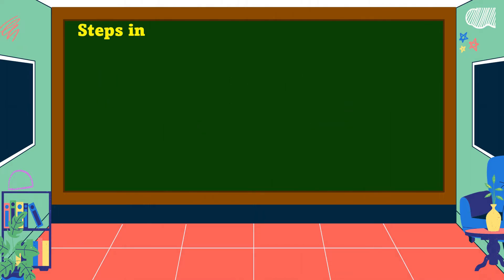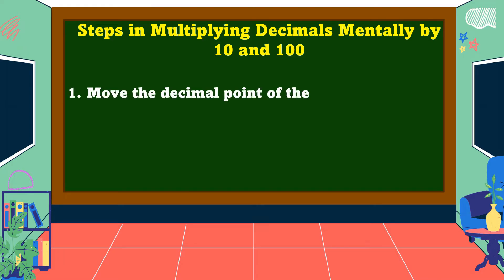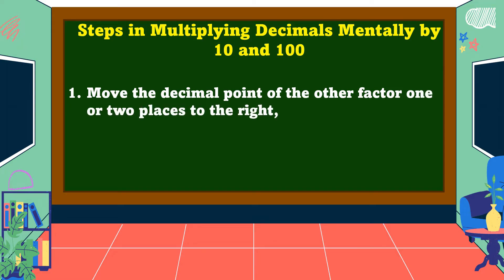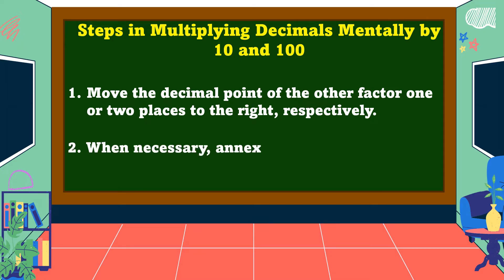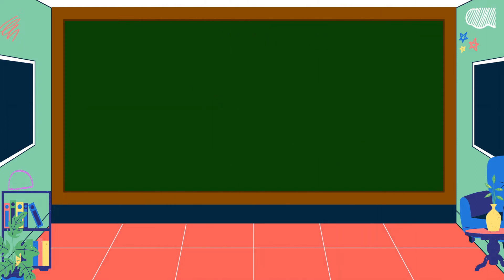These are the steps in multiplying decimals mentally by ten and one-hundred. Number one, move the decimal point of the other factor one or two places to the right respectively. Number two, when necessary, annex zeros in order to have the correct number of decimal places. To fully understand the steps, let's study some examples.